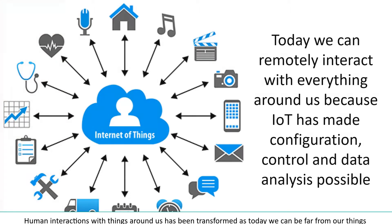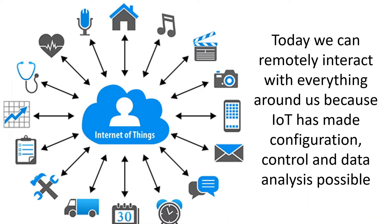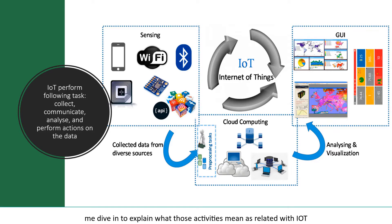Human interactions with things around us has been transformed, as today we can be far from our things and yet still have full control and data on those things. The interaction with those things is now limited to just configurations, control, or data analysis, while the devices perform their tasks and objectives without human intervention. An Internet of Things device performs the following tasks: collect, communicate, analyze, and take actions on data.